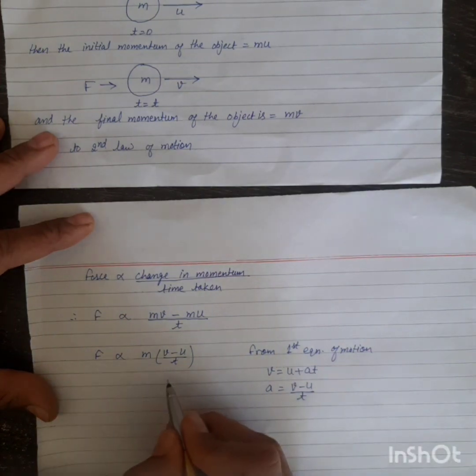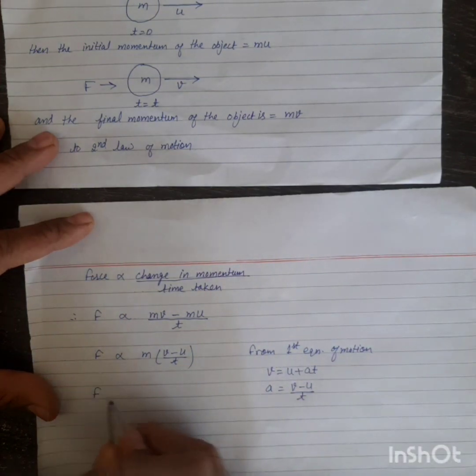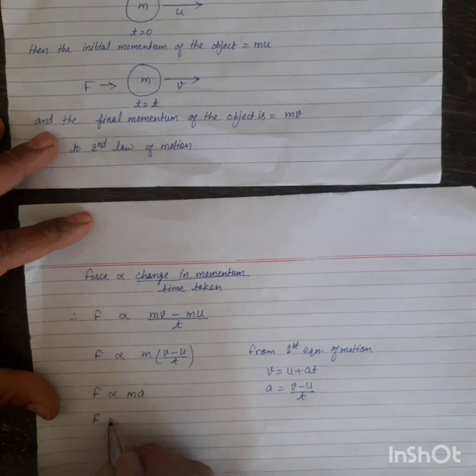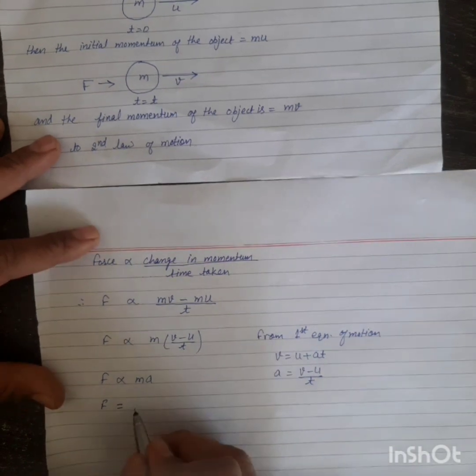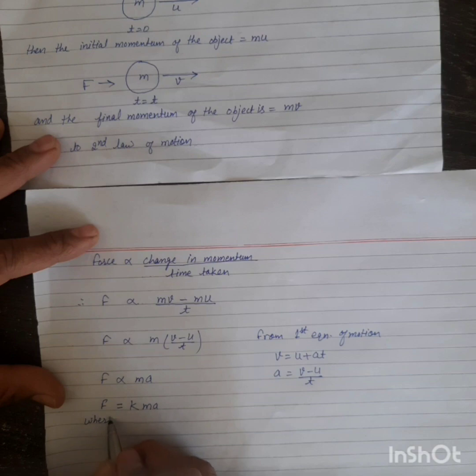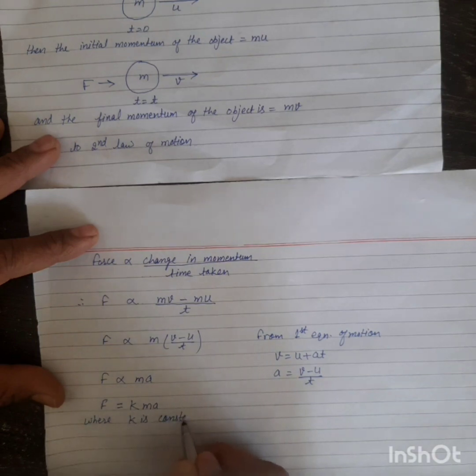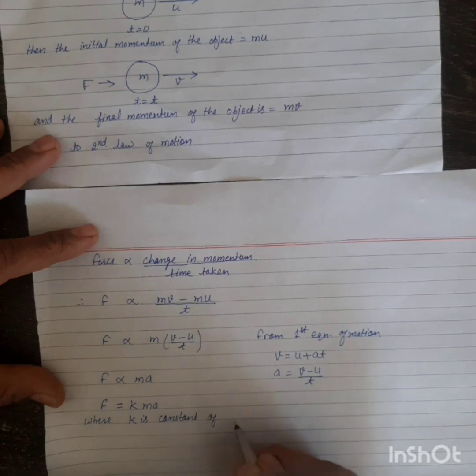Substituting this value in this equation, F is directly proportional to ma, and F equals kma, where k is constant of proportionality.